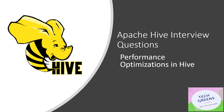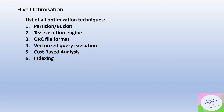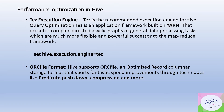Hello friends, welcome to Tech Greens. In continuation of our series on Apache Hive interview questions, today we'll look at the different performance optimization techniques available in the Hive world. We'll see the tricks and tips to optimize queries in Apache Hive. The major optimization techniques are: partitioning and bucketing, using TEZ as the execution engine, using the right file format (ORC), vectorized query execution, cost-based analysis, and indexing.